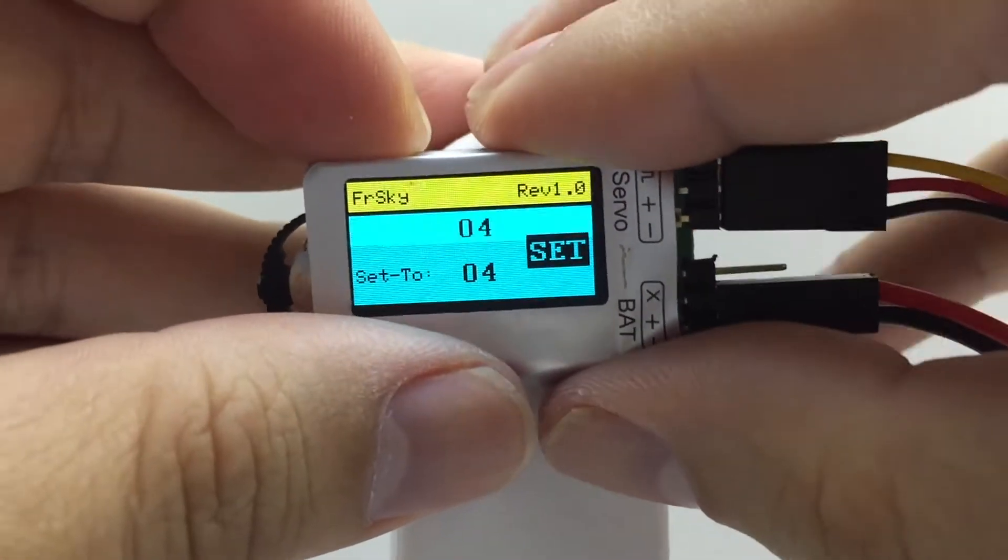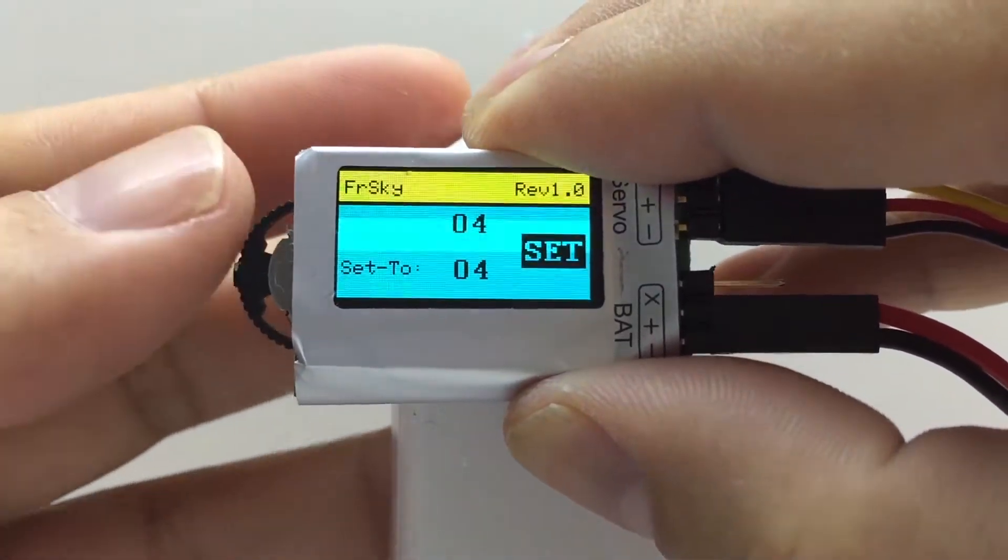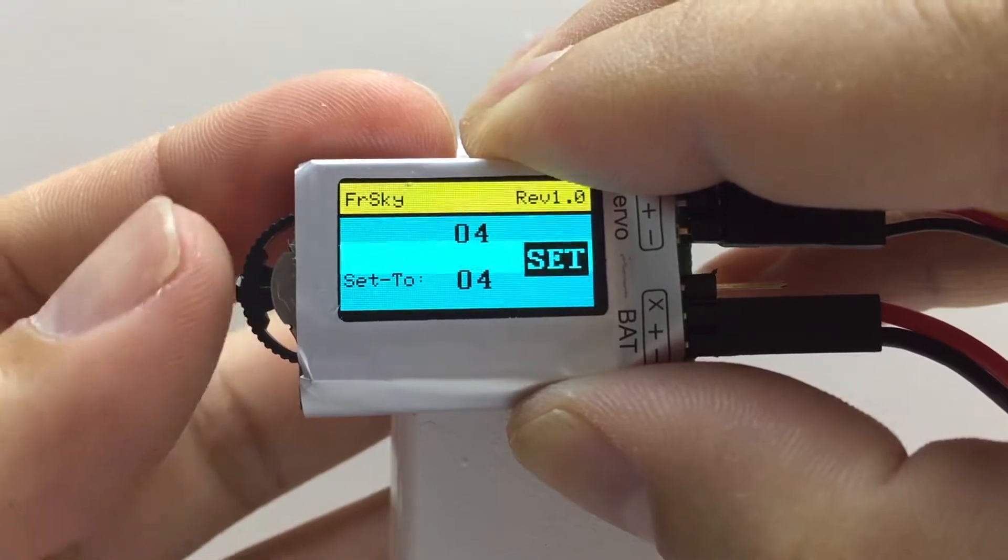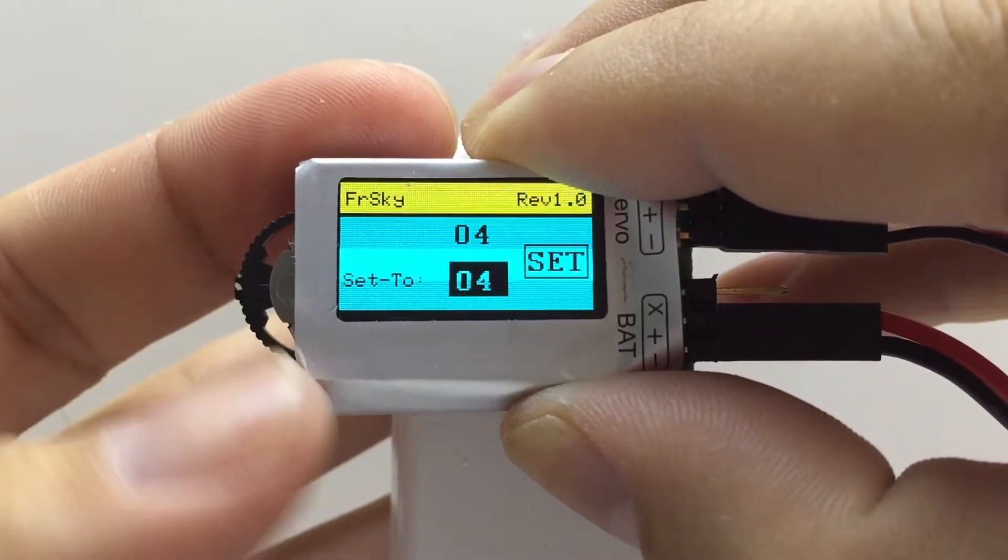Turn the wheel down taking care not to push it in. The two digit number next to set 2 is now highlighted.